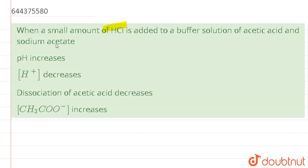When a small amount of HCl is added to a buffer solution of acetic acid and sodium acetate. The options are: option 1 — pH increases; option 2 — concentration of H+ decreases; option 3 — dissociation of acetic acid decreases; option 4 — CH3CO- increases. Let's start our solution.